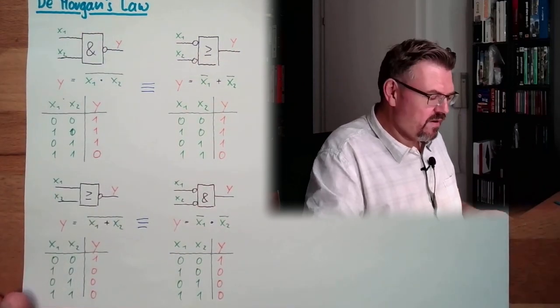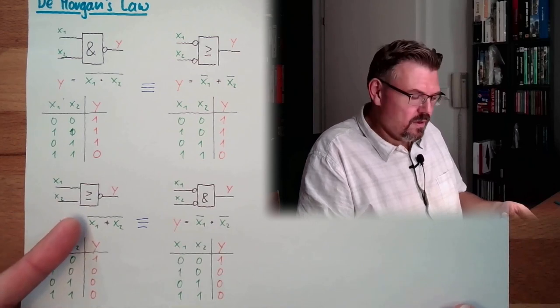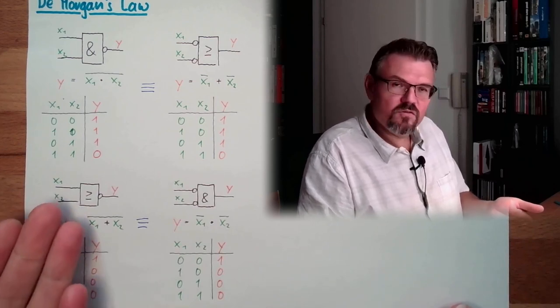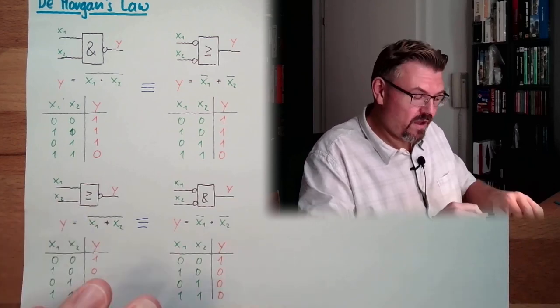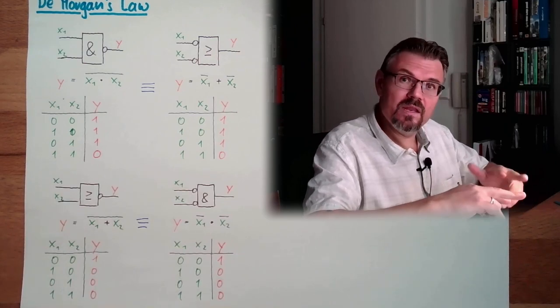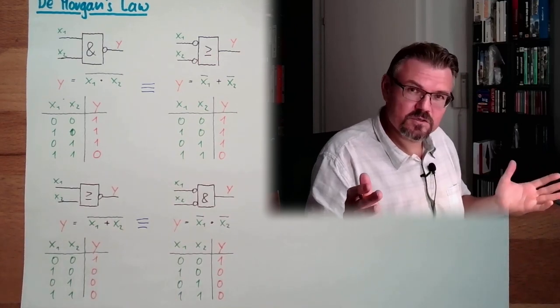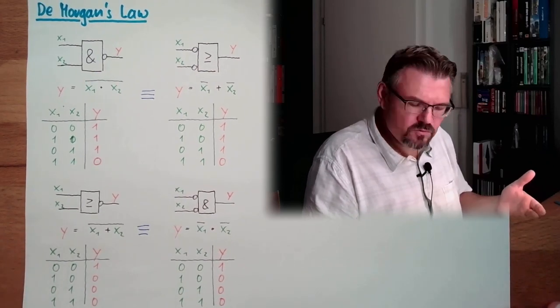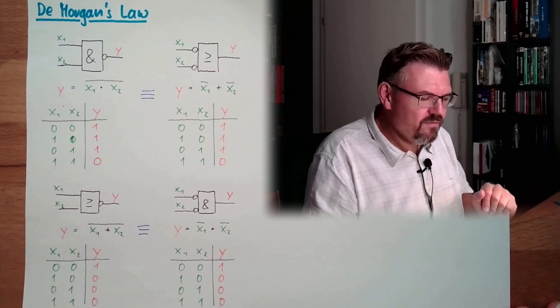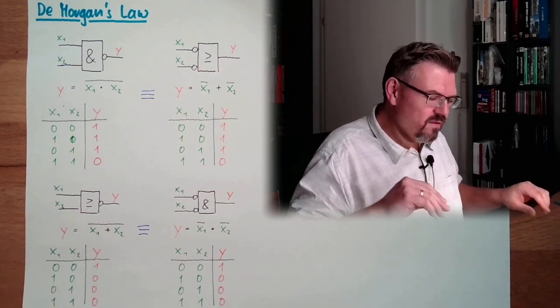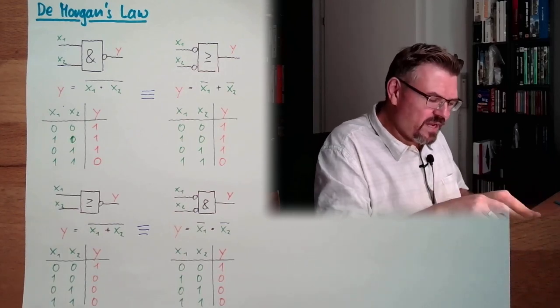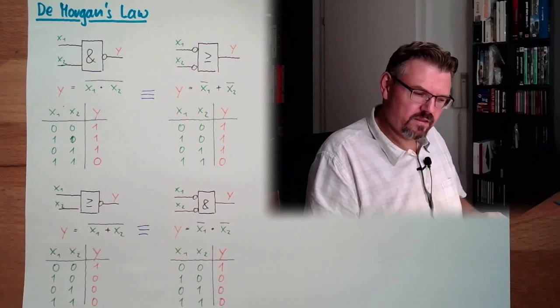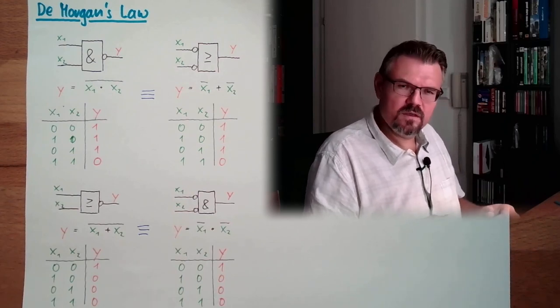So whenever you change from an OR to an AND, you have to turn around all in and outputs. That's actually it. You simply have to exchange all NOTs at the in and outputs. Then it's working.